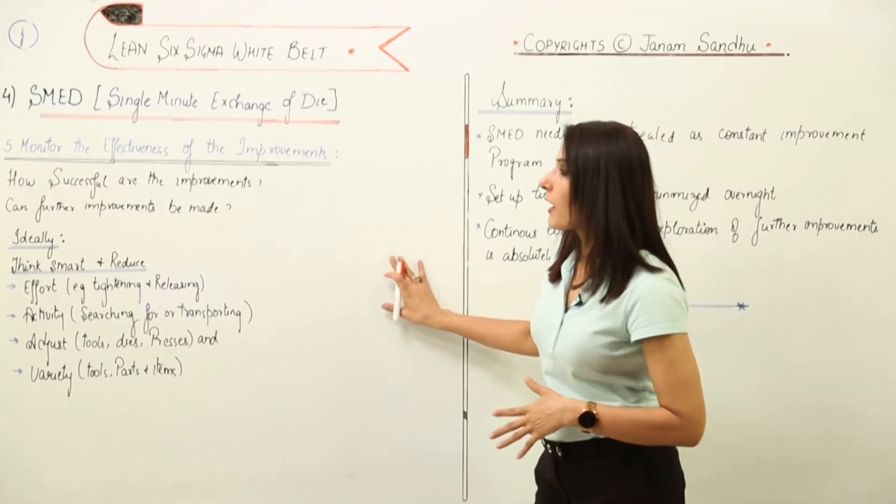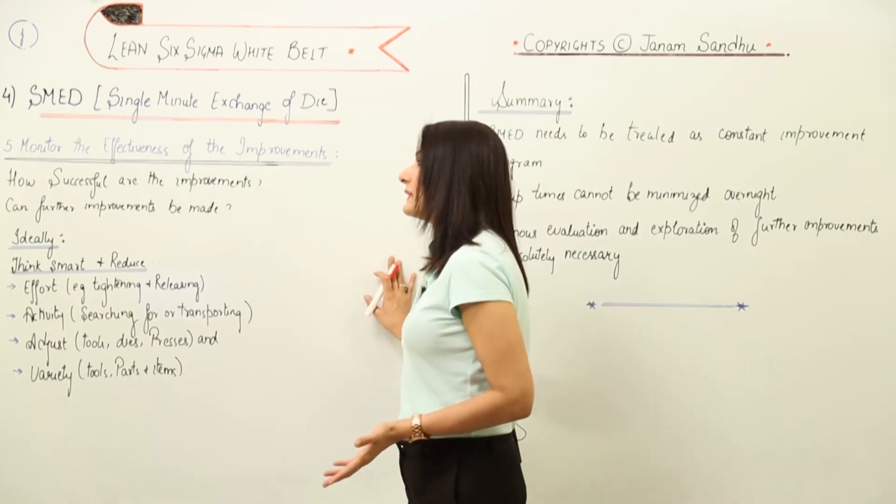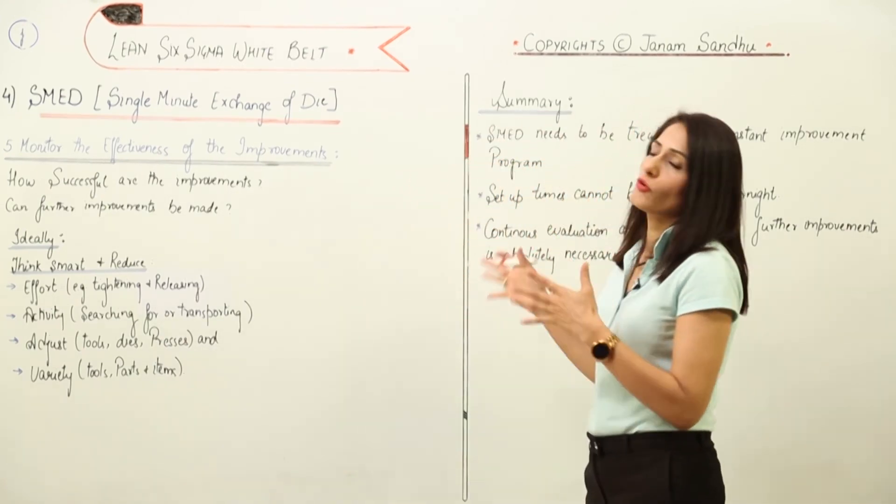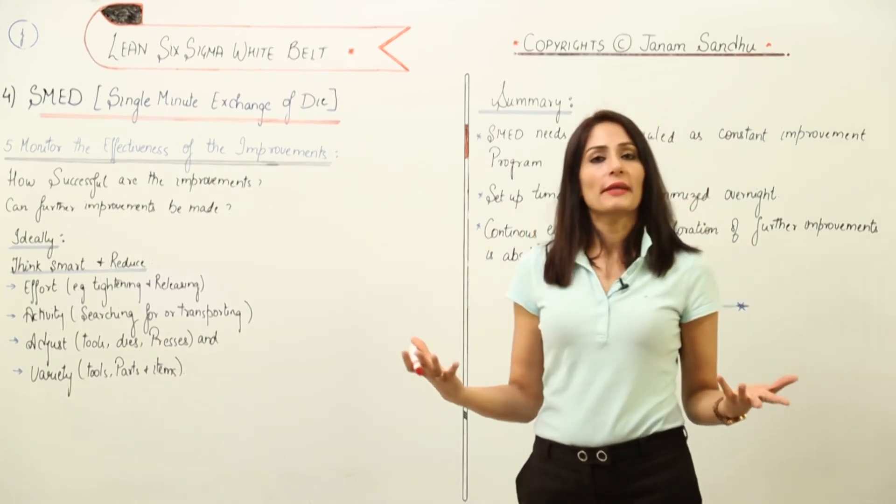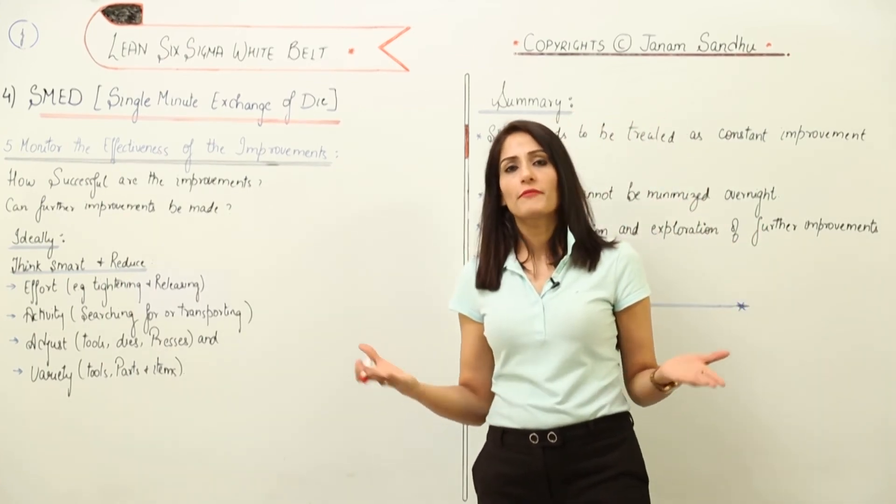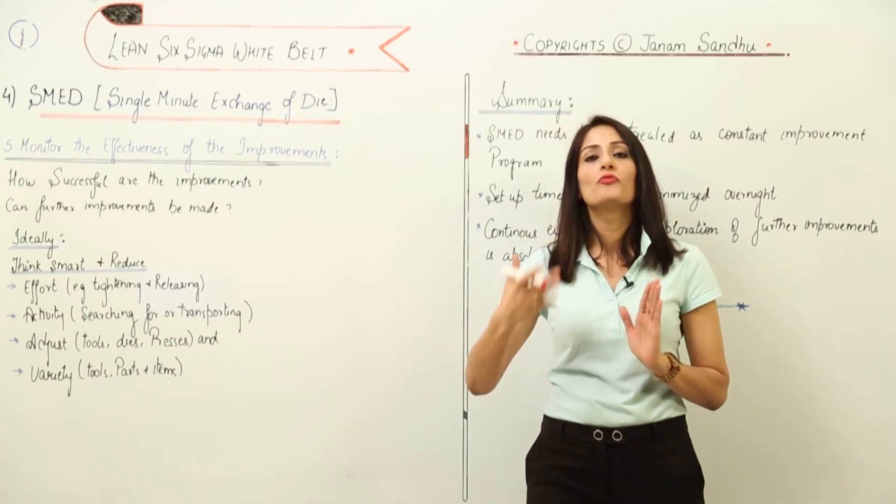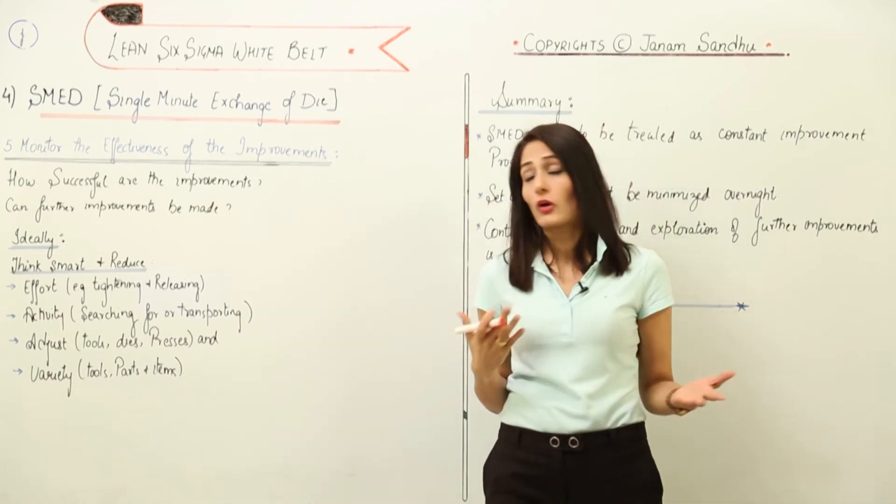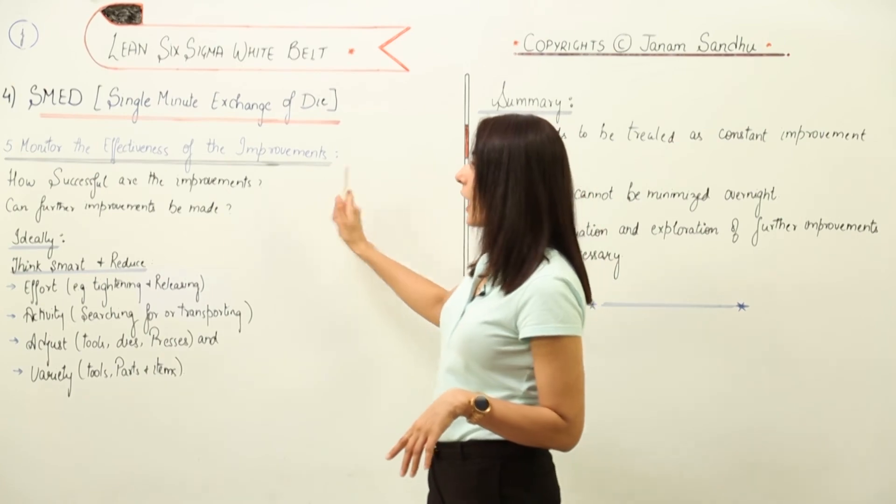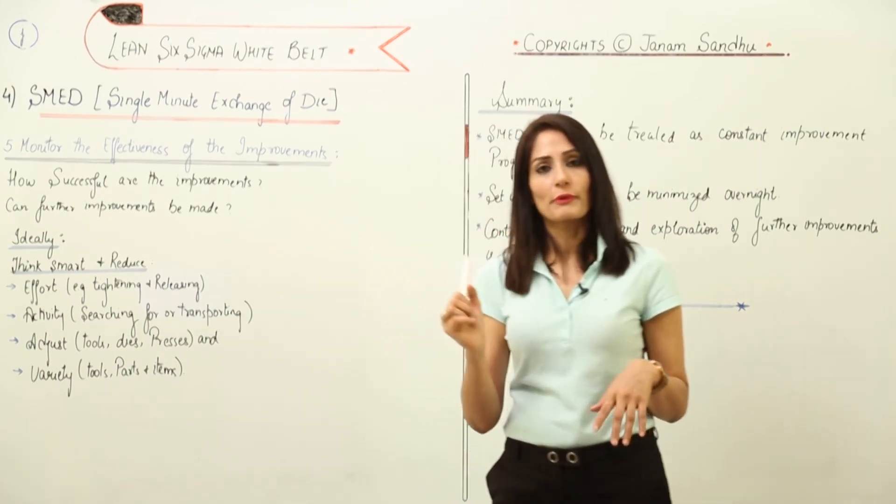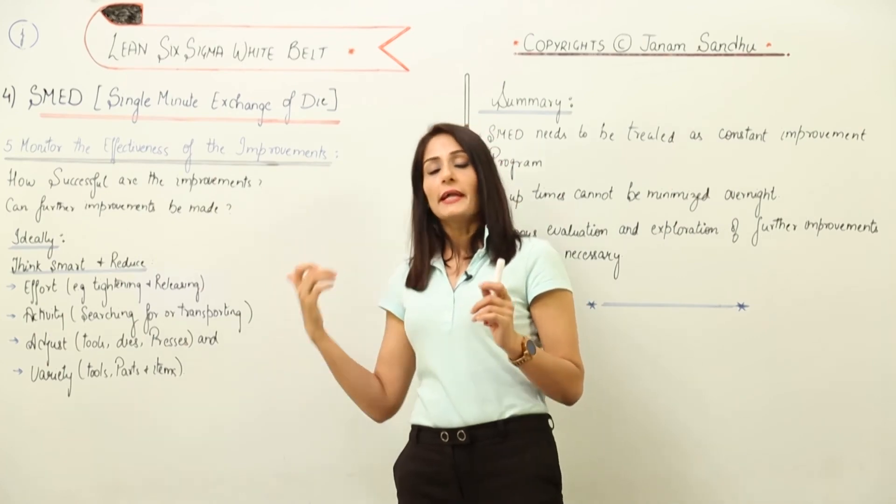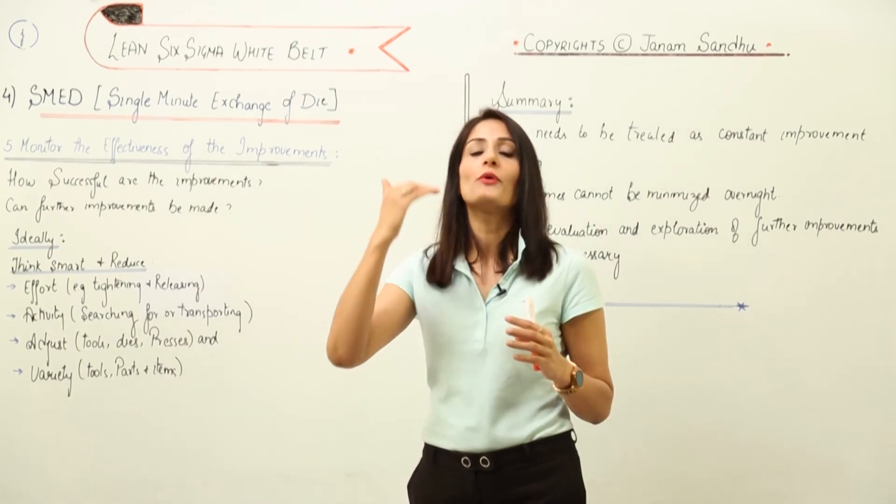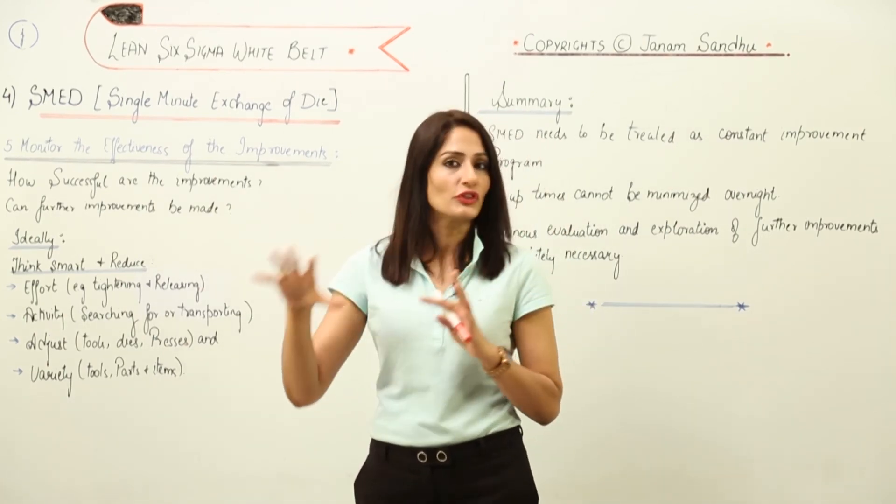Moving to the fifth part of how to implement SMED: monitor the effectiveness of the improvements. Obviously, if you are going to make improvements, you have to monitor them - whether they are working for you, whether they are working in your favor or not. First thing is you have to see how successful are the improvements. When we talk about successful in SMED, it means how much time did you actually save in the changeover process.